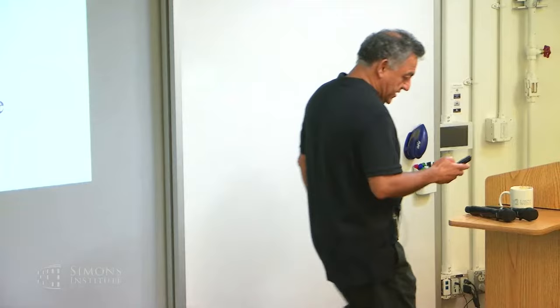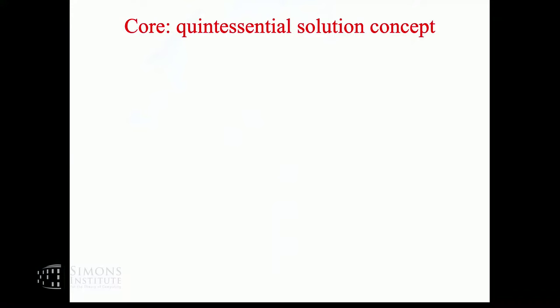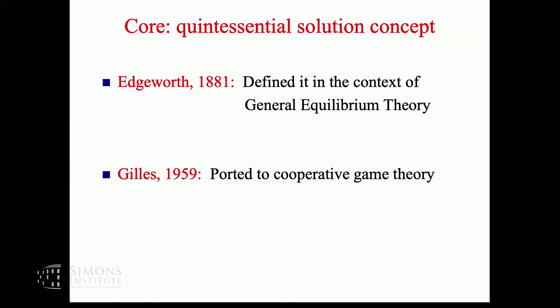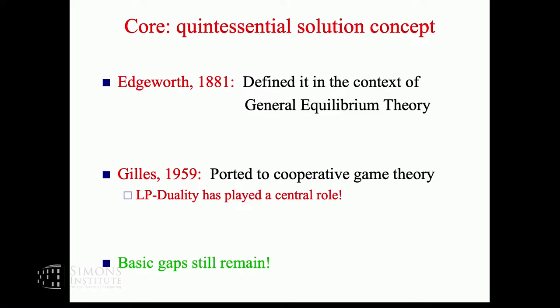It's really a privilege to have such a wonderful resource for CS and econ and other fields. I'm going to talk about the core, which is a quintessential solution concept in economics as well as game theory. An early version was defined by Edgeworth in the 19th century in the context of general equilibrium theory. Then in 1959 it was ported to cooperative game theory by Giles.